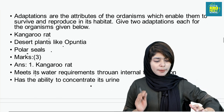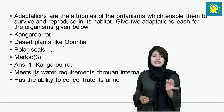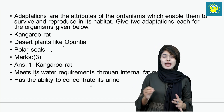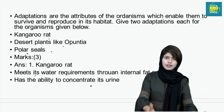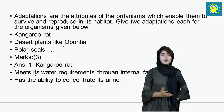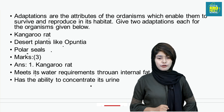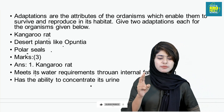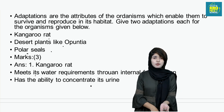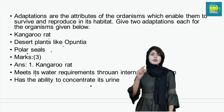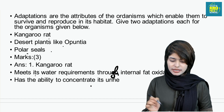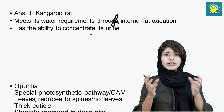Adaptations are the attributes of organisms which enable them to survive and reproduce in their habitat. We need to give two adaptations each for the organisms given below. Kangaroo rats: they meet their water requirements through internal fat oxidation, and they produce very concentrated urine.